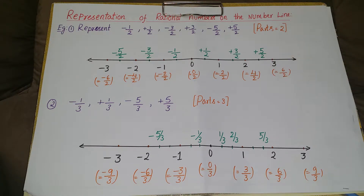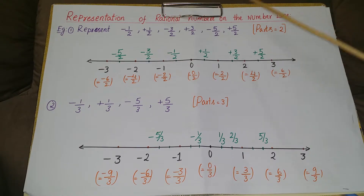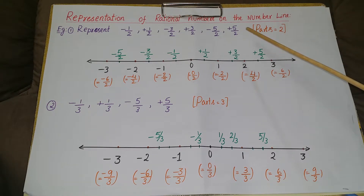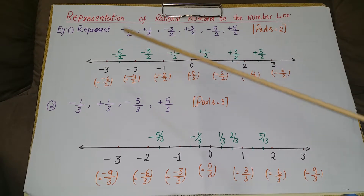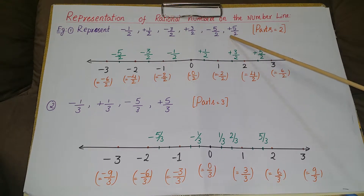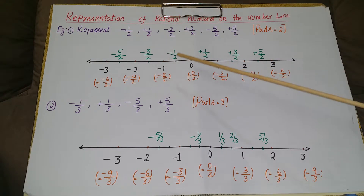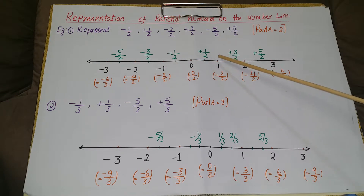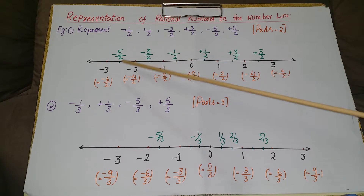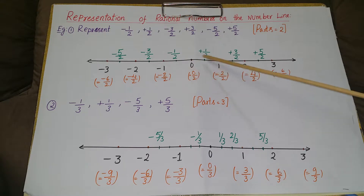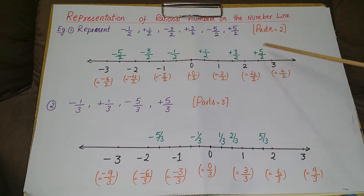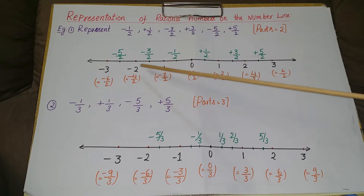Today I am going to explain how to represent rational numbers on a number line. We have already known about the number line. Just draw a number line, mark 0 at the midpoint, then write positive integers 1, 2, 3 etc. on the right and negative integers -1, -2, -3 etc. on the left side.